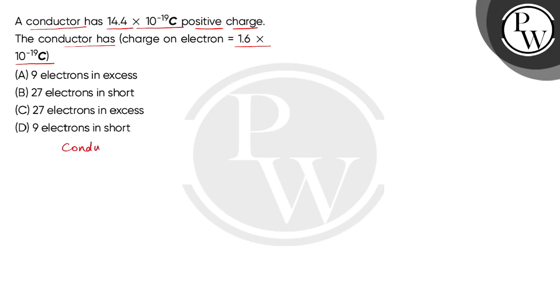We have to consider a conductor with positive charge, that is q = +14.4 × 10^-19 coulombs. And we have to find the number of electrons that we get in excess or in short.